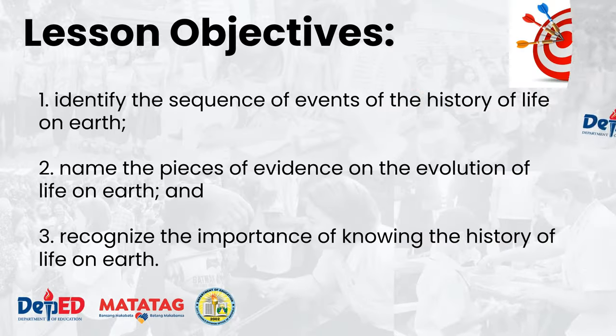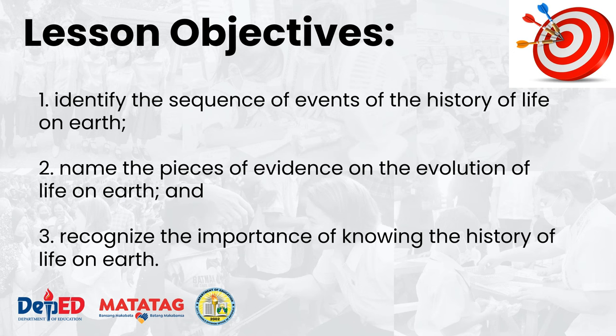These are our lesson objectives: number one, identify the sequence of events in the history of the Earth; number two, name the pieces of evidence of the evolution of life on Earth; and number three, recognize the importance of knowing the history of life on Earth.